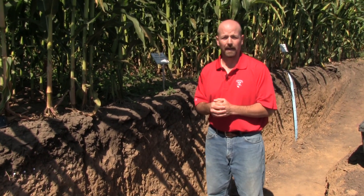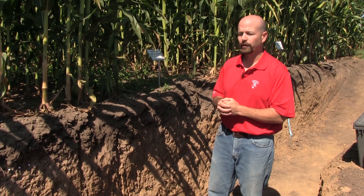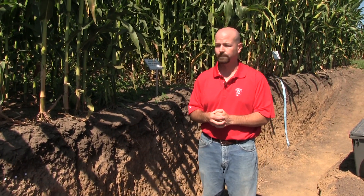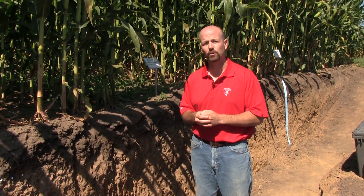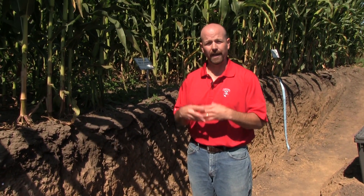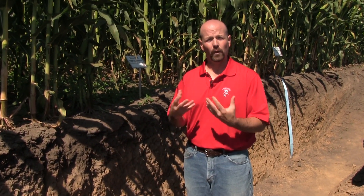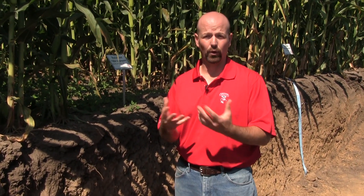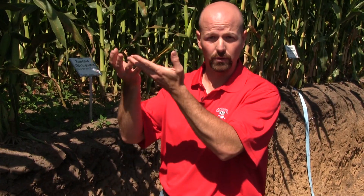What I want to talk about is organic matter — the differences between these systems and what's happening. When we do a tillage operation, we are incorporating air and oxygen into the system, which tends to be a limiting factor for microbial activity. Microbes feed on the organic matter in the soil, and when you introduce that oxygen through tillage, the microbes start growing and multiplying. They feed on that organic matter, and that carbon gets released as CO2 into the atmosphere.